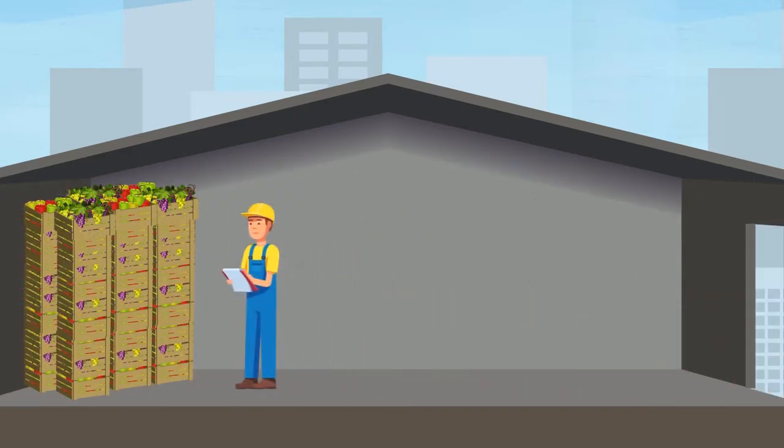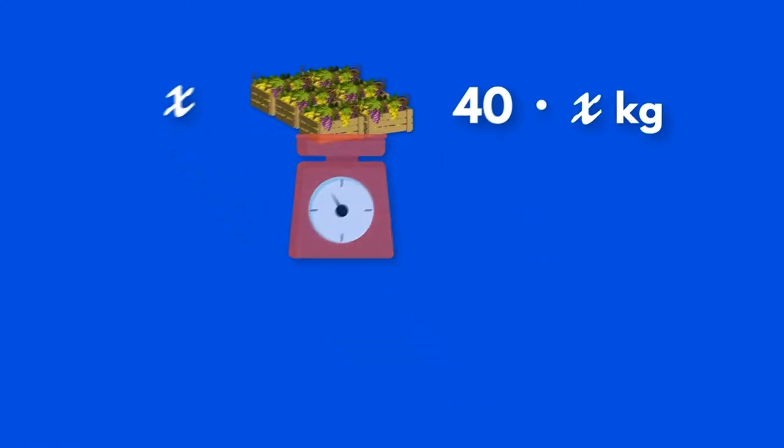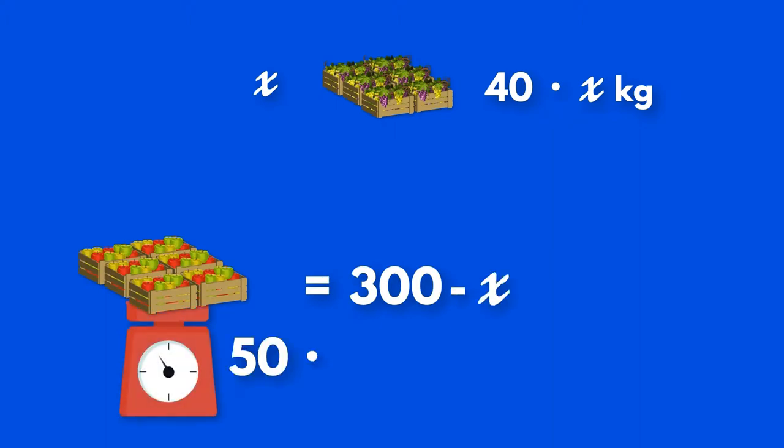Let's write the number of crates of grapes you have as being x. They weigh 40 times x kg. The number of crates of apples you have in stock is 300 minus x, which weighs 50 times 300 minus x kg.